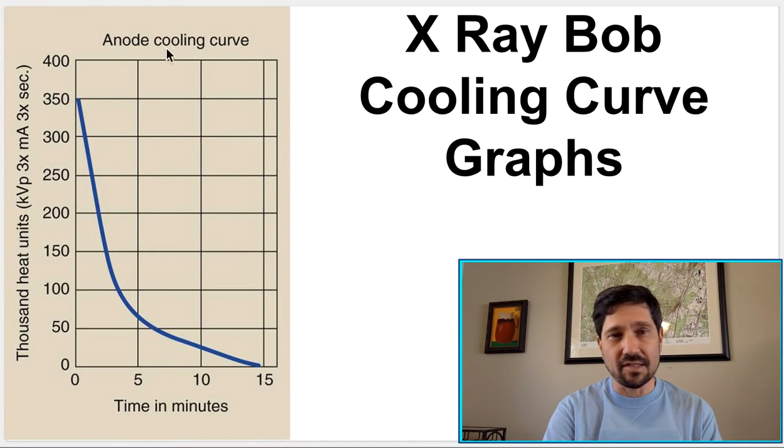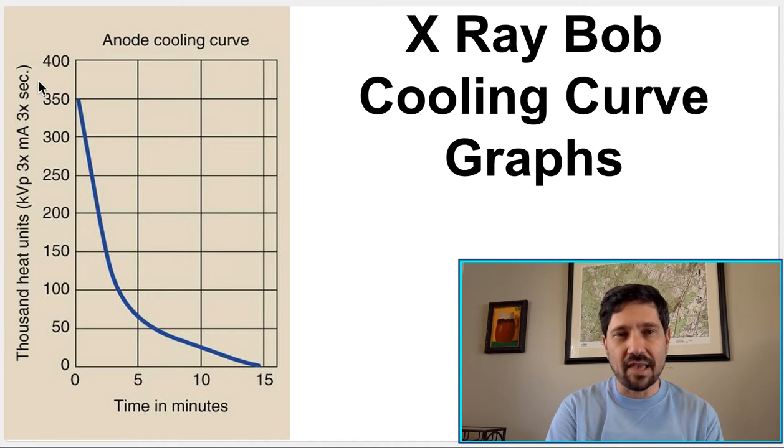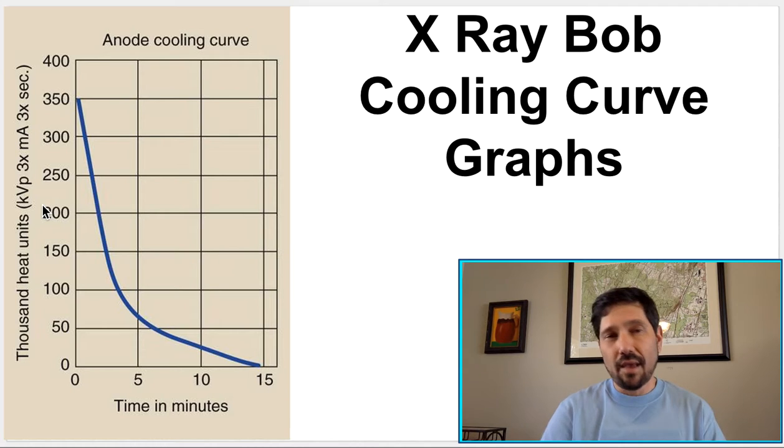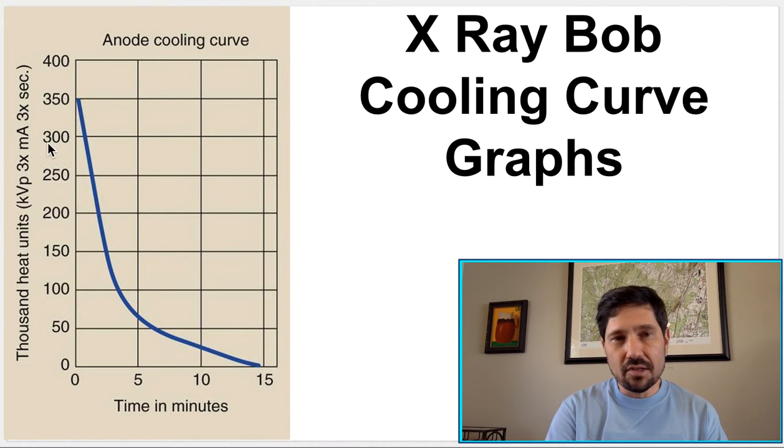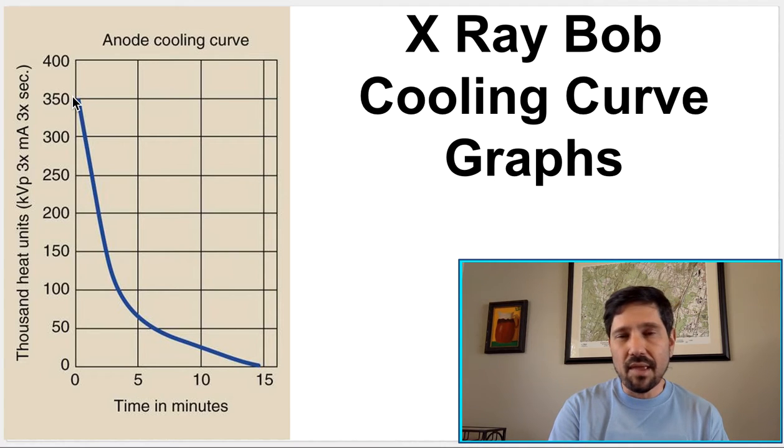Here's one right now. It tells us it's an anode cooling curve. What it shows on the Y scale is the heat units, meaning how many heat units you can generate before the anode gets too hot. When the anode gets too hot, you need to give it time to cool off. So if I did a technique that used 350,000 heat units, that would drive the anode, if it started completely cold, all the way up to its maximum, and then I would have to wait till it cools off before I use it again.